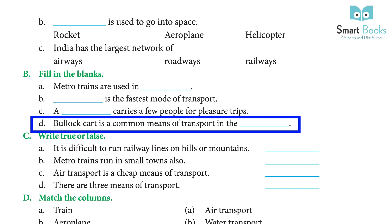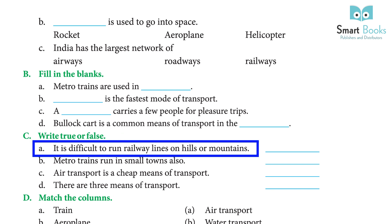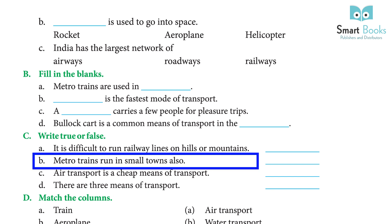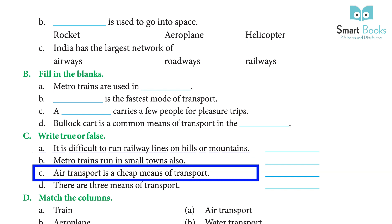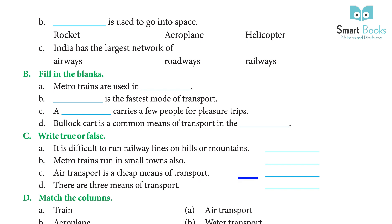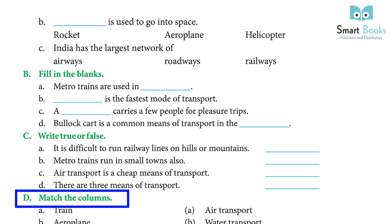(d) Bullock cart is a common means of transport in the dash. Answer: villages. Exercise C — True or False. (a) It is difficult to run railway lines on hills or mountains. Answer: true. (b) Metro trains run in small towns also. Answer: false. (c) Air transport is a cheap means of transport. Answer: false.